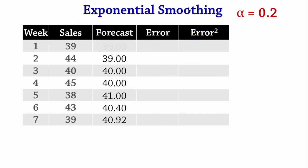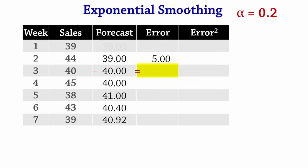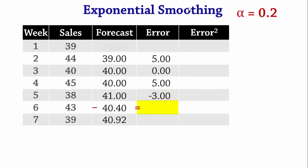When computing errors for exponential smoothing forecasts, we do not calculate an error for period 1 unless otherwise stated. The forecast error for Week 2 is 44 − 39 = 5. For Week 3: 40 − 40 = 0. For Week 4: 45 − 40 = 5. For Week 5: 38 − 41 = −3. For Week 6: 2.6. For Week 7: −1.92.